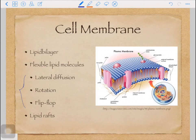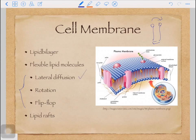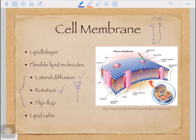The first is lateral diffusion, which means molecule A and molecule B — they are neighbors and they can switch positions. This motion happens very frequently. The second motion is rotation; it also happens very frequently. The single lipid molecule will rotate along the axis on which its tail lies. The third motion happens very rarely — it's flip-flop, which means two lipid molecules that are tail-to-tail will switch positions.